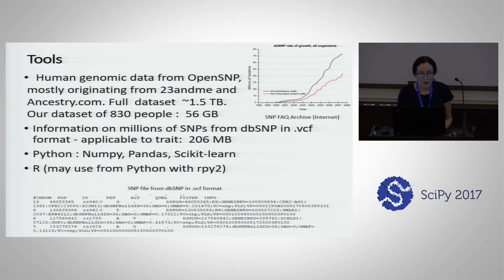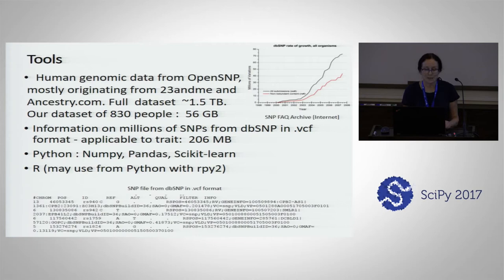That's why we need both sources of information — we picked up 206 megabytes for human information on SNPs. The other tools we used are Python, NumPy, Pandas, and scikit-learn, which make this job very easy. We also used R, and you can use R from Python with RPy2.